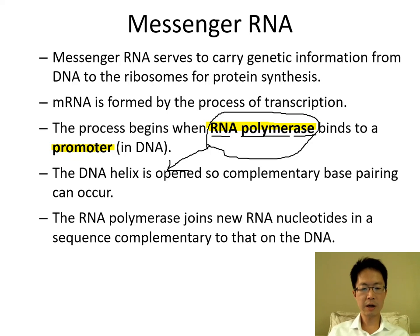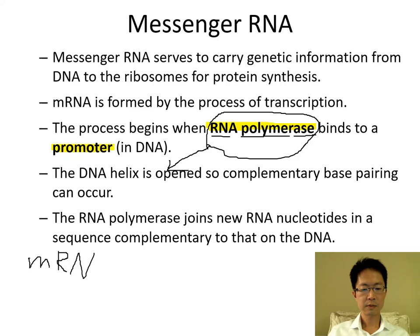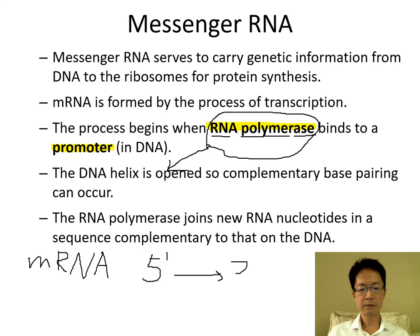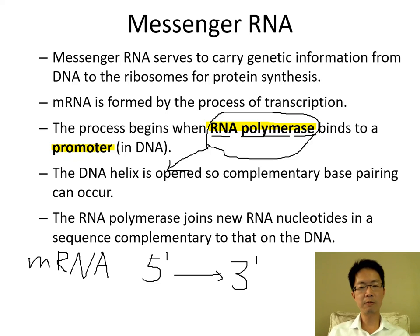RNA polymerase joins new RNA nucleotides in a sequence complementary to that on DNA. By the way, the messenger RNA — just like DNA — we can number the carbon atoms in the pentose from one prime to five prime. The newly made messenger RNA is also made from five prime end to three prime end.